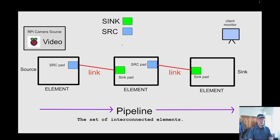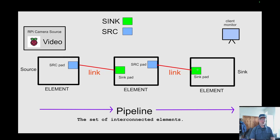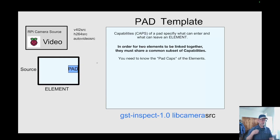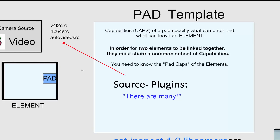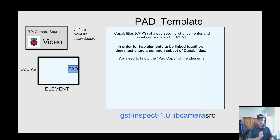We start from the source element, go into the middle — there's a sink pad — and in the middle element there's also a source pad connected to the sink pad on the far right. The last element is your sink, with a single sink pad at the end. Here we have the camera source (Raspberry Pi camera), and to the right we have V4L2 source, H264 source, and the audio-video source — examples of sources you'll find in the plugins.